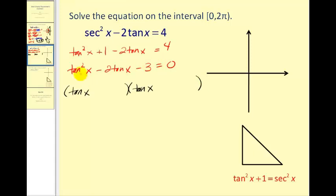And luckily this is factorable. Tan squared x is a perfect square. Now we can place the factors of negative three in the second positions. Put a minus three here and a plus one here. Our outer product is negative three tan x. Inner product is positive one tan x. Which does sum to the middle term. So if this product is equal to zero,